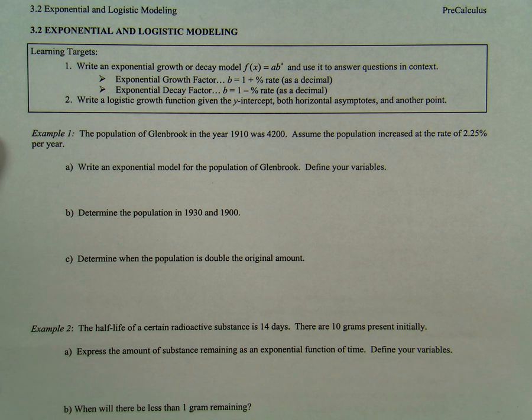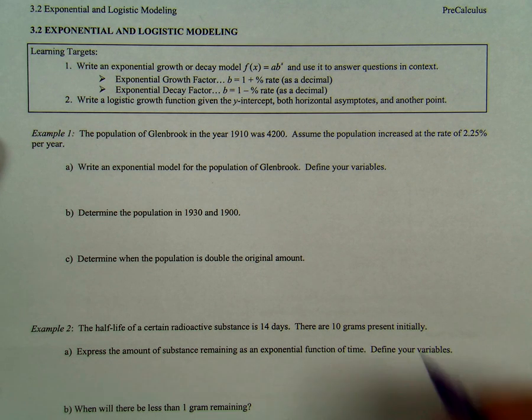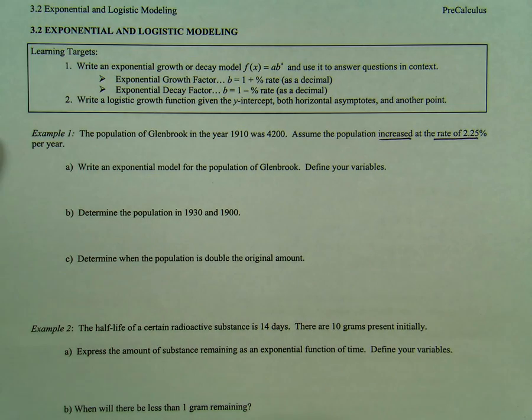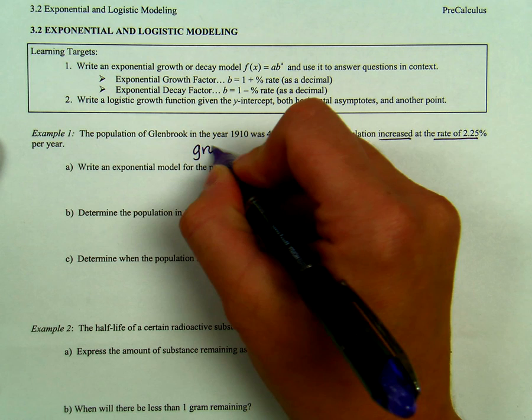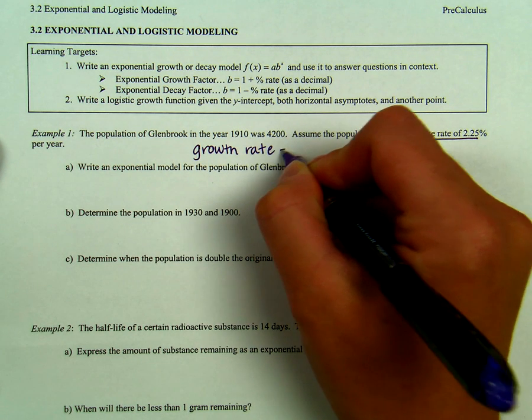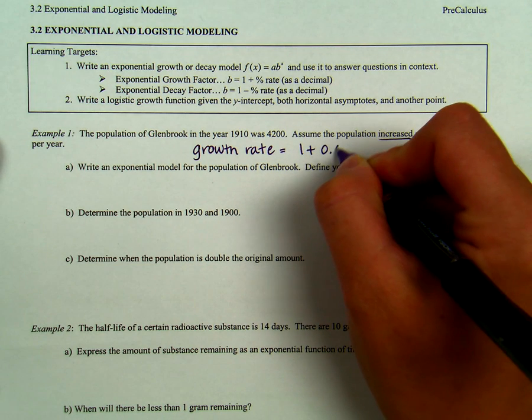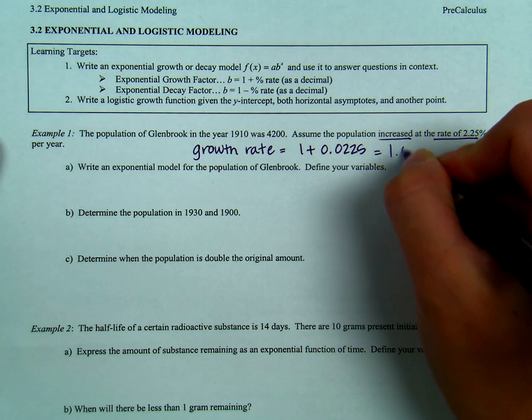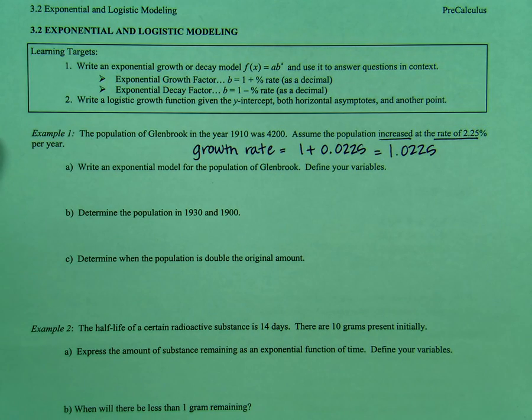In example one, it says the population of Glenbrook in the year 1910 was 4,200. Assume the population increased at a rate of 2.25% per year. First of all, let's talk about the growth rate. In this case, we're increasing at a rate of 2.25% per year. That means that our growth rate is going to be 1 plus 0.0225, giving us a growth rate of 1.0225.